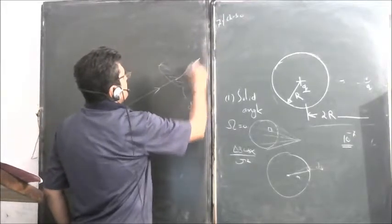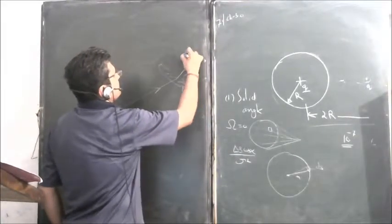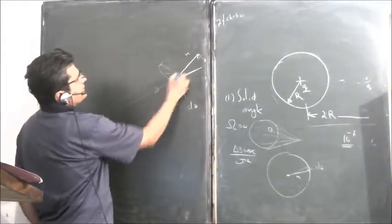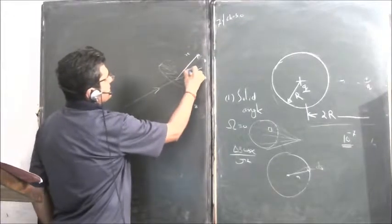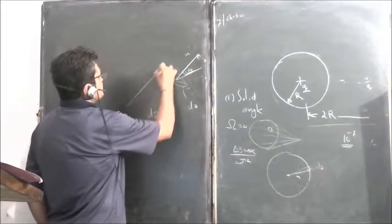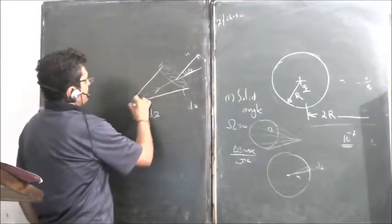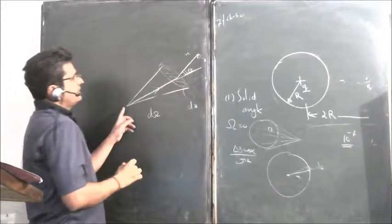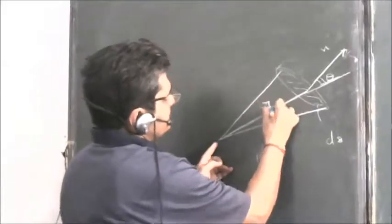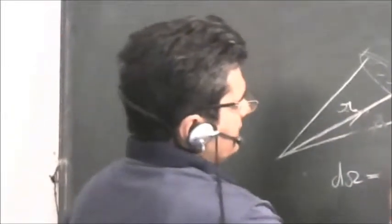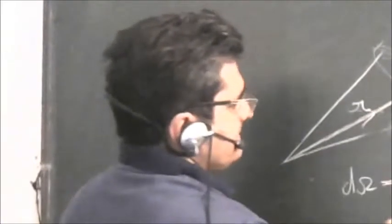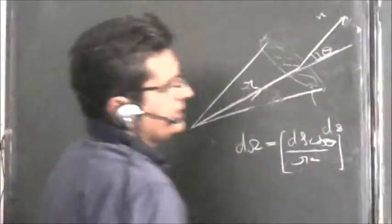Surface area always has a normal vector N, and this is the angle formed by the radius R and the normal vector. If that angle is theta, then the solid angle formed by this surface at a point which is R distance away is dS cos theta upon R square.